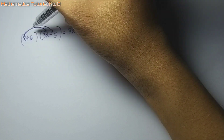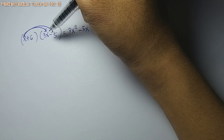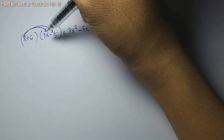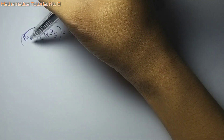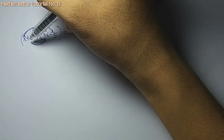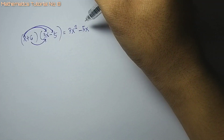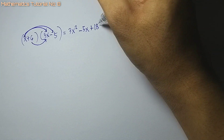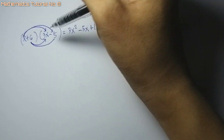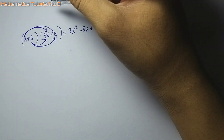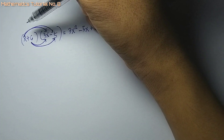Kini nga term na multiply na nato sa tanan terms dito, pero wala pa tanan. Ang giingon sa rule, tanan terms man daw i-multiply dito sa picas. So apilon pa ang ikaduwang term, si 6. So 6 times 3x — that is 18x.